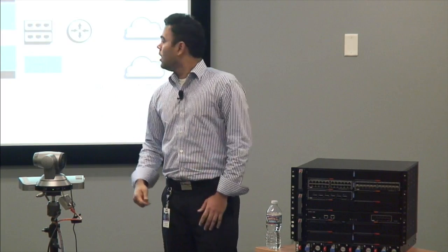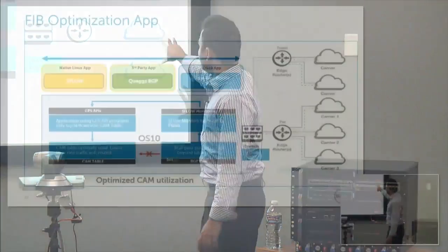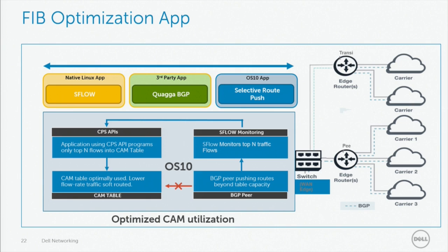How are we going to do that? This is the typical block diagram. We have a WAN edge switch — the Dell S6000 — connecting to two ISPs: the transit ISP and the peering ISP. Initially, all traffic from the customer to the internet goes through a default route provided by the transit ISP. This is the FIB optimization app we developed. Whatever routes it receives from BGP from the internet, it does not push them all to hardware. Instead, we run an Sflow agent on the switch, which monitors the top end flows and then pushes those routes to the CAM table.